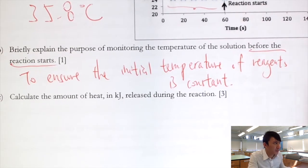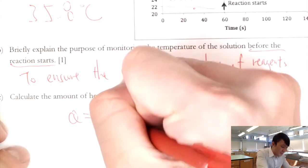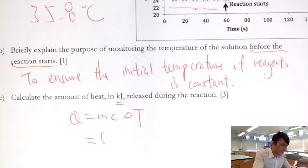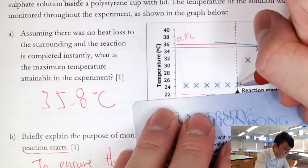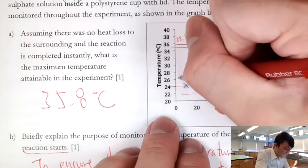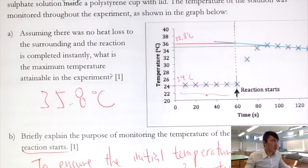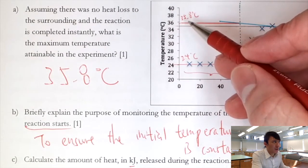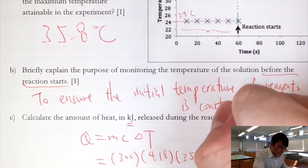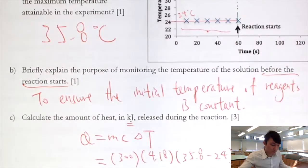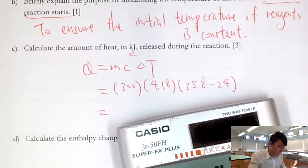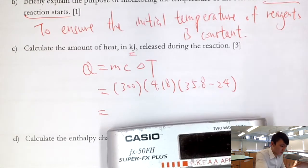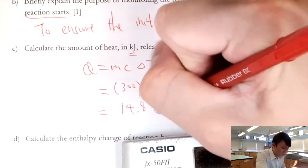For part C, q = mcΔT. The mass is 300 g (from 300 cm³), specific heat capacity is 4.18, and ΔT = 35.8 − 24 = 11.8°C, reading the initial temperature of 24°C from the graph. This gives q = 14.8 kJ.